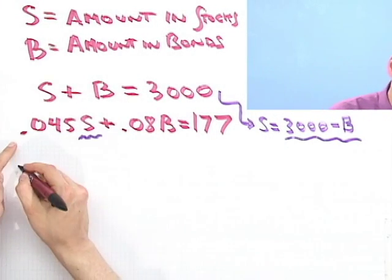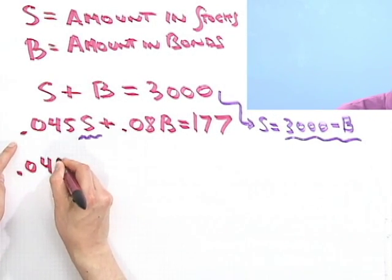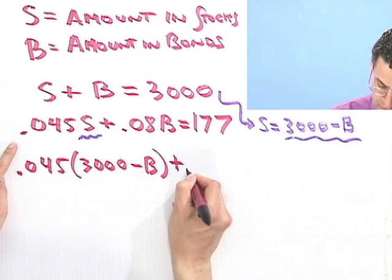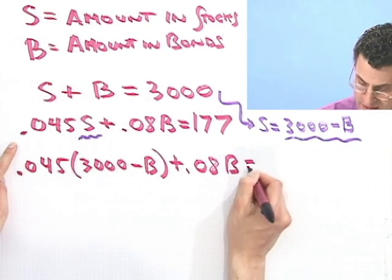So in fact, what would I see? I would see 0.045 times S, which is now 3,000 minus B, plus 0.08 B, and that equals 177.